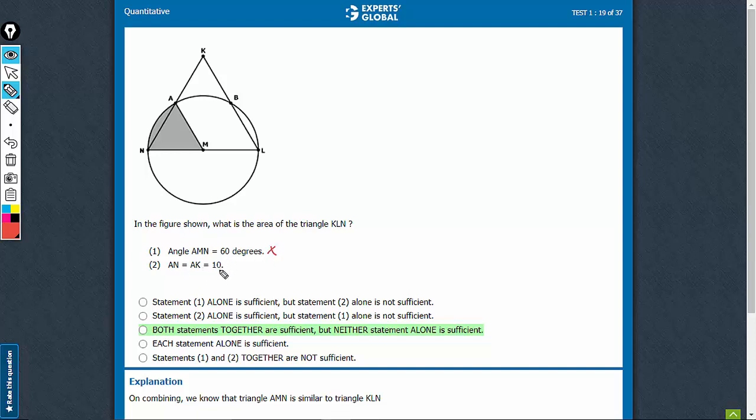Statement 2 says AN is equal to AK is equal to 10. So this is 10 and this is 10. Of course, this is too little information to answer the question because nothing can be said about these parts. So alone it is not sufficient.